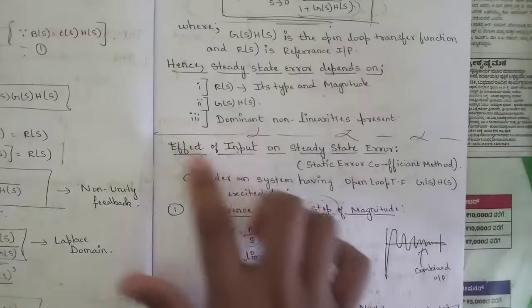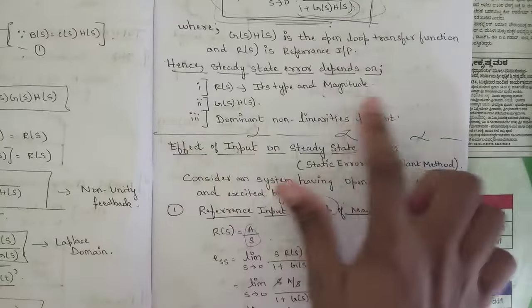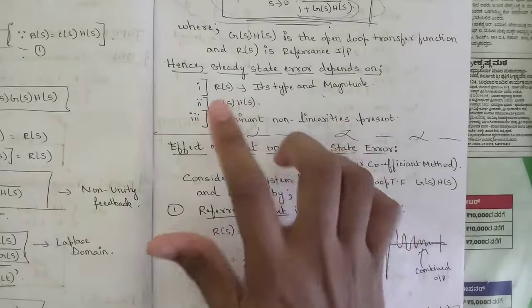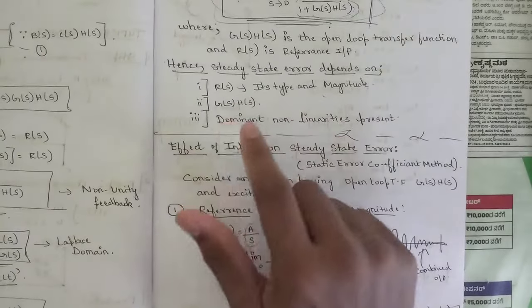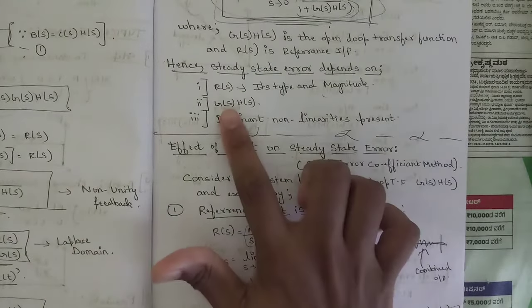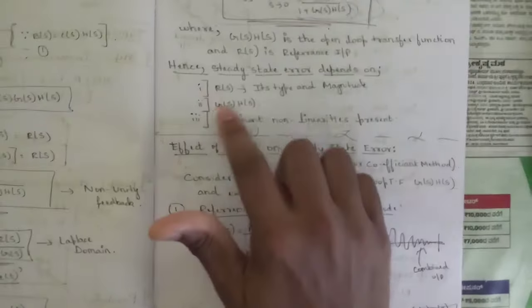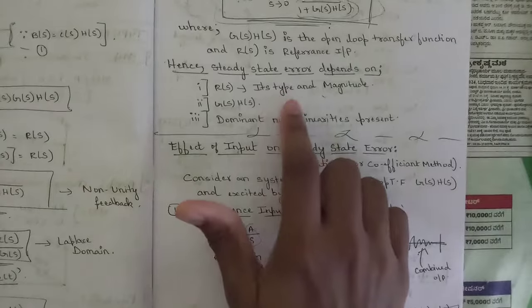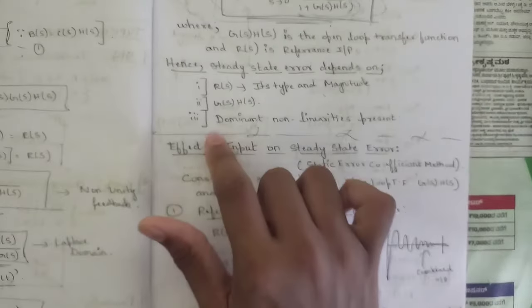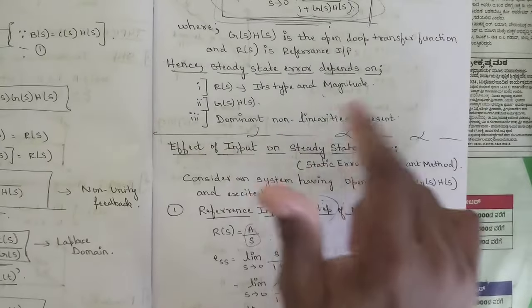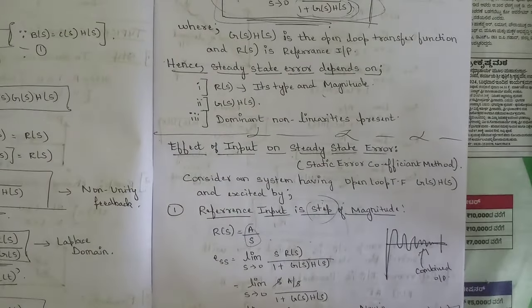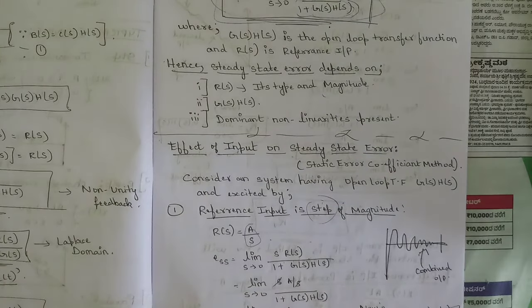The steady state error mainly depends on R(s), the type and magnitude of G(s)·H(s) — the transfer function — and it is dominant based on non-linearities present. No linear relation is assumed when calculating any kind of steady state error.